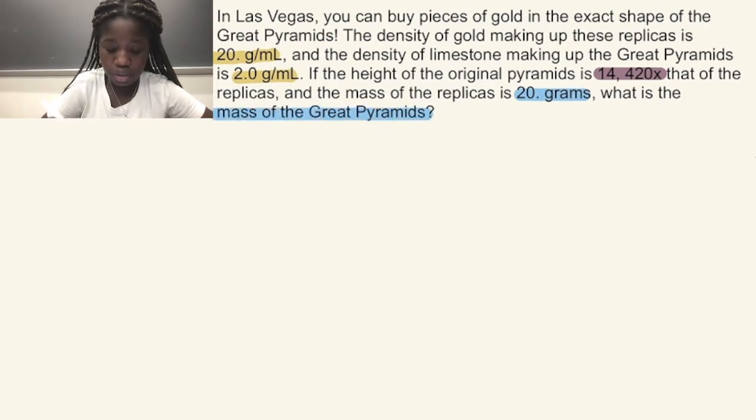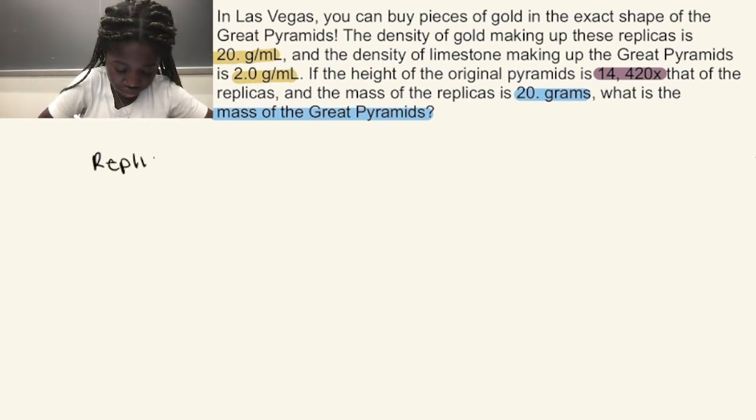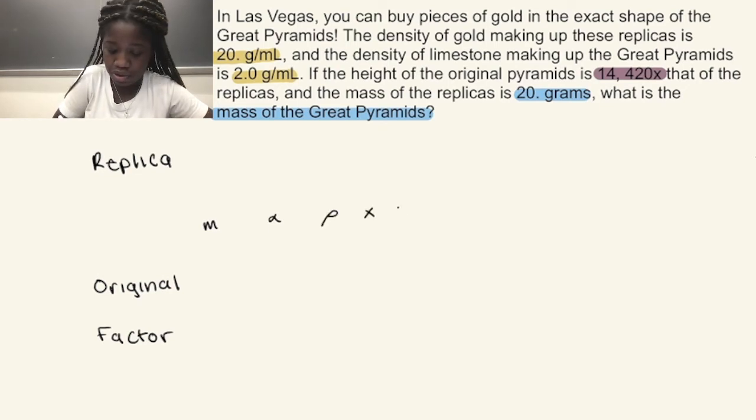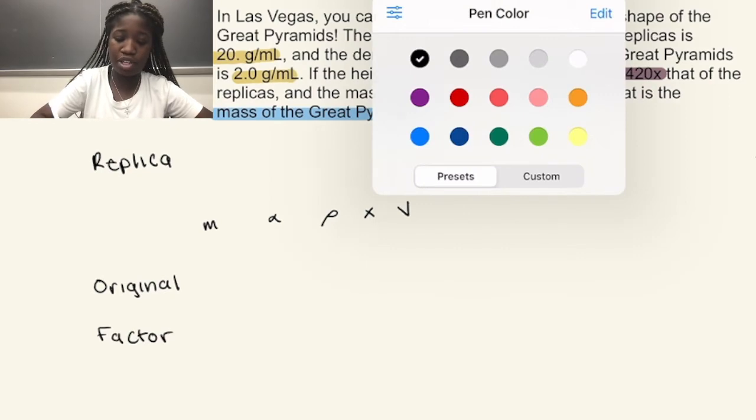So we have mass, we have density, so we're definitely using our proportionality expression that was written last. So let's create our proportionality setup. I'm going to put replicas on top, original on the right below it, and on the very bottom the factor line. And then right in the middle we're going to be putting our proportionality expression in which mass is proportional to density times the volume.